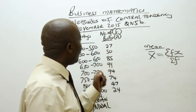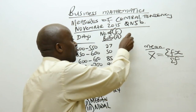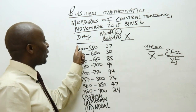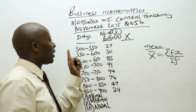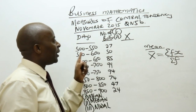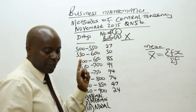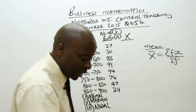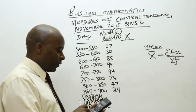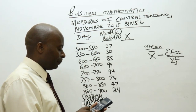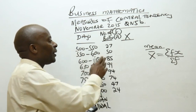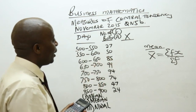What we need to do is to create a column where we shall capture x. X in this particular case will come from these ranges, but specifically x will be the midpoint. How do we get the midpoint? We take 500 plus 550, divided by 2. You add these two numbers and divide by 2 to get the middle values.